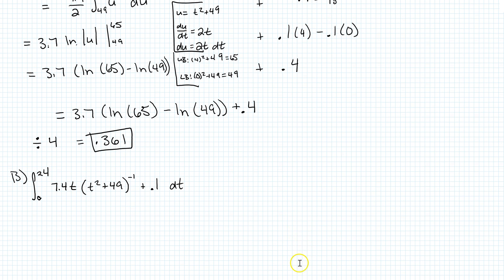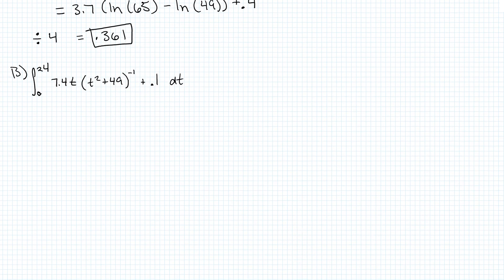So copy it, and then down here we'll write B and paste that function. Okay, except we're not going from 0 to 4, we're going from 0 to 24. Same process. I'm going to pick up the pace a little bit here because otherwise this video is going to take forever. So we're going from 0 to 24 of 7.4t times t squared plus 49 to the negative 1. That didn't change. I still have to split it into two pieces, so I'm still doing another integral over here, 0 to 24 of 0.1. Do the easy one first. That's going to give us 0.1t, this time evaluated from 0 to 24.